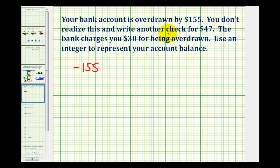But then when you write another check for $47, this is also money that you will owe that you don't have in your account. So we can represent this check by a negative number as well. So we'll add a negative 47 to this amount.